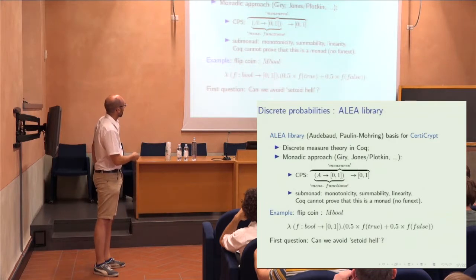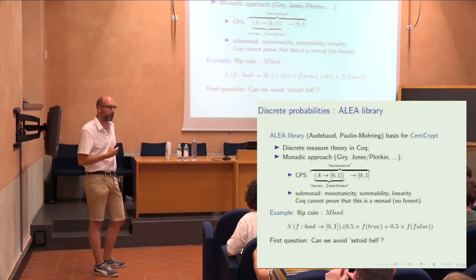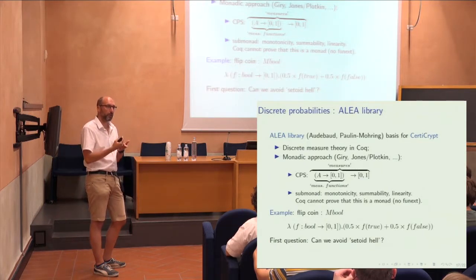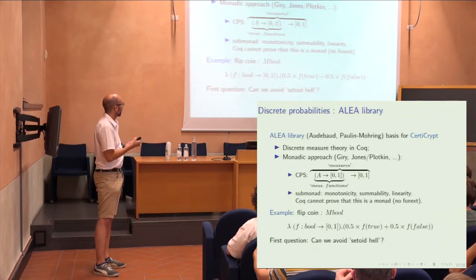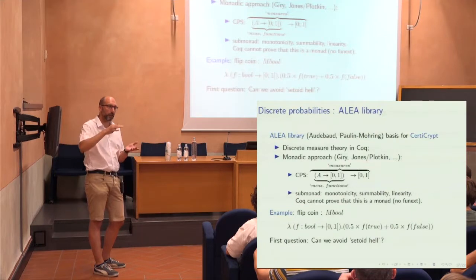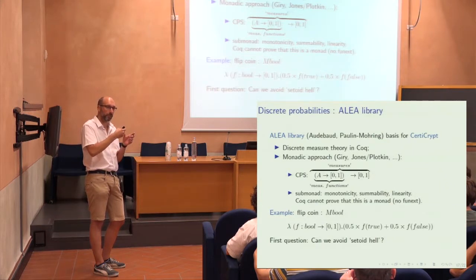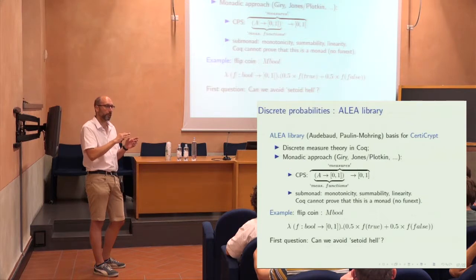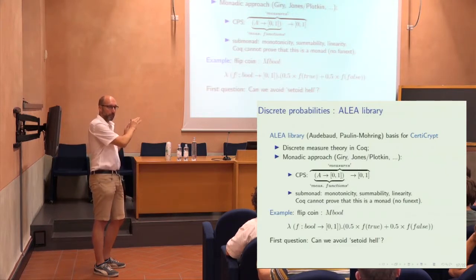For example, one writes down a coin flip, and the question is: can we avoid the setoid hell? The Coq type theory lacks functional extensionality and quotient types. The solution proposed by Martin Hofmann was to look at setoids — a degenerated version of groupoids — where you take an object of your original type theory with an equivalence relation on it, then mod out by that equivalence relation. This is very close to the exact completion of a category. If you think of taking the exact completion so that you actually add quotient constructions, that's good enough for this context.